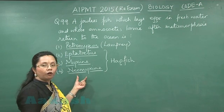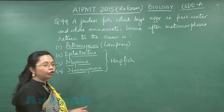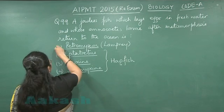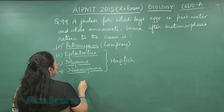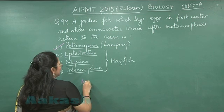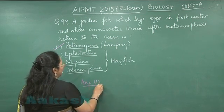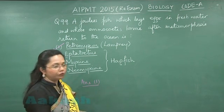This type of migration is called anadromous migration, and our answer is Petromyzon, that is answer 1. Let us move on to question number 100.